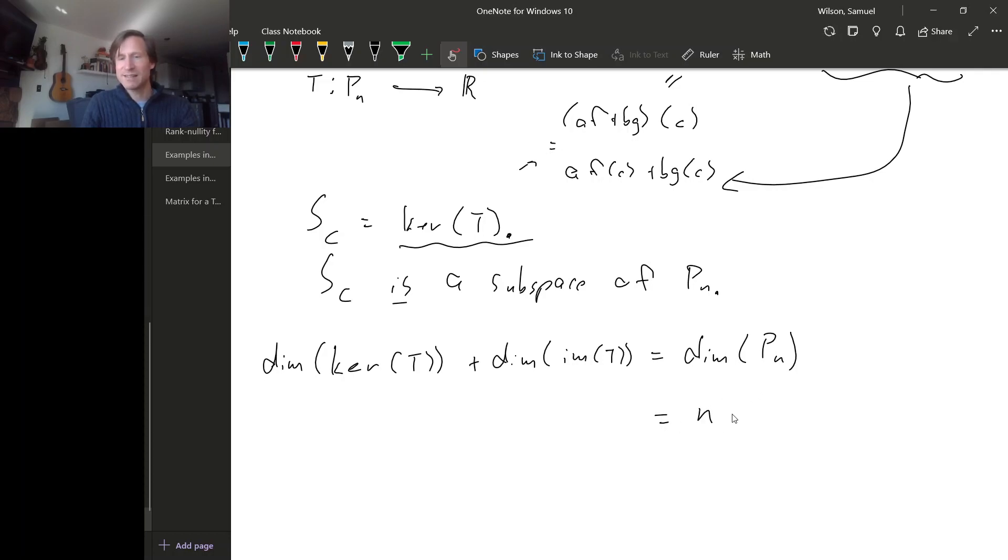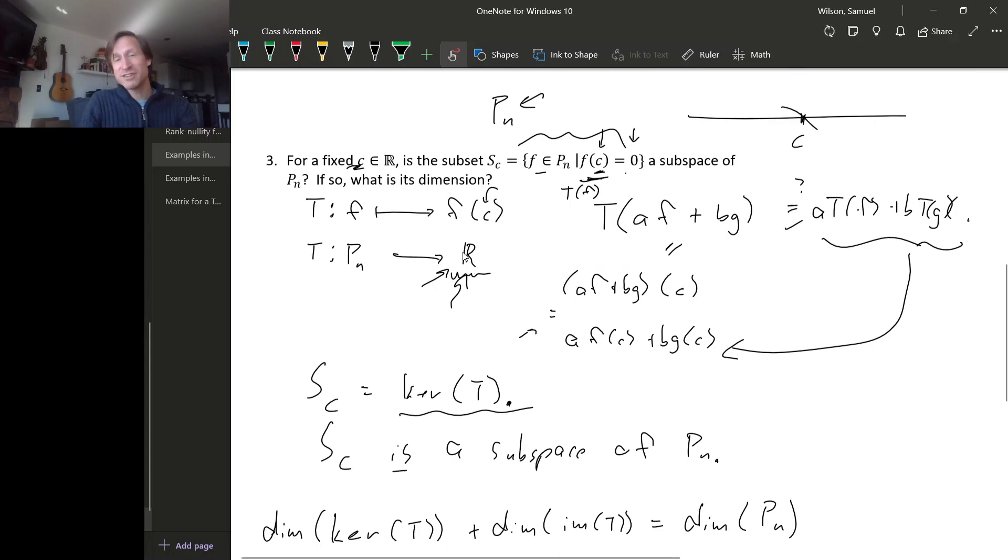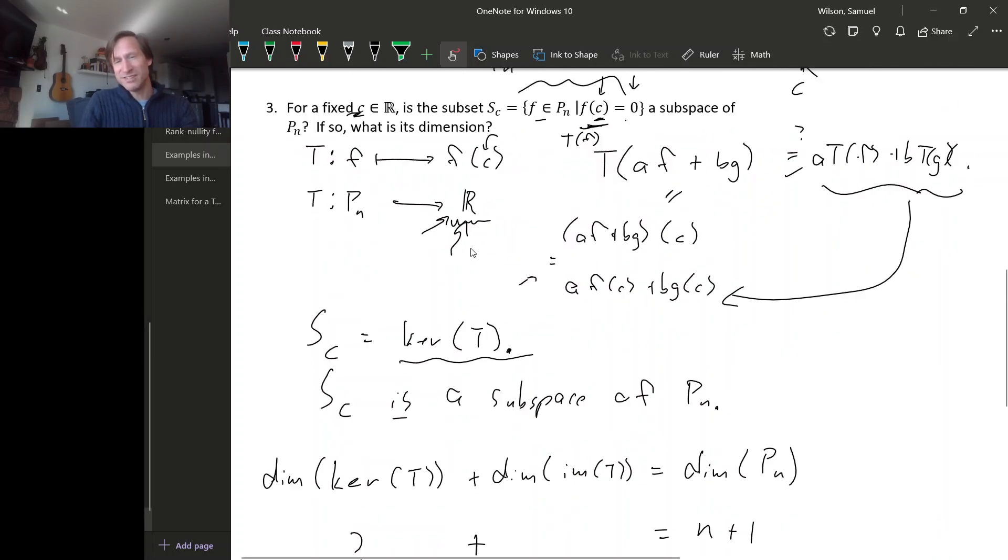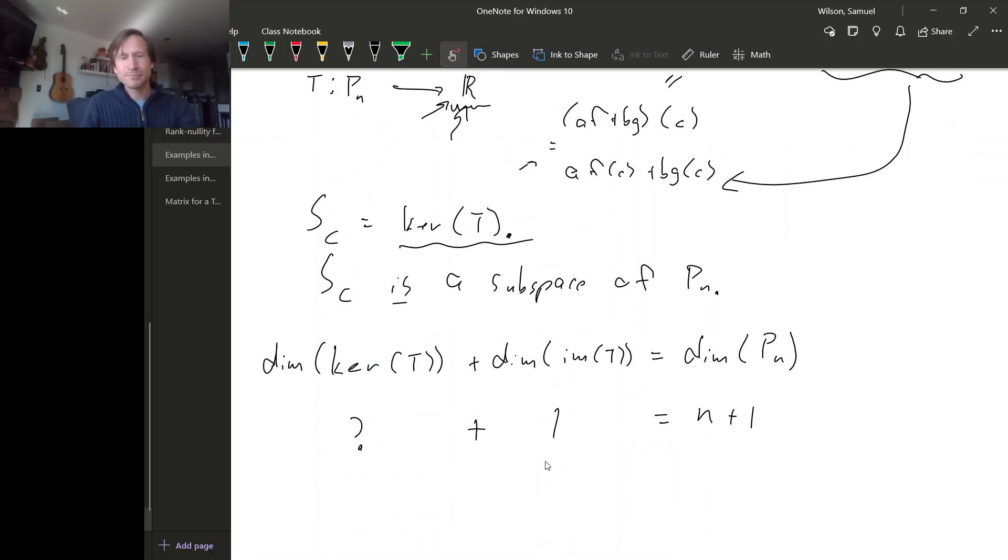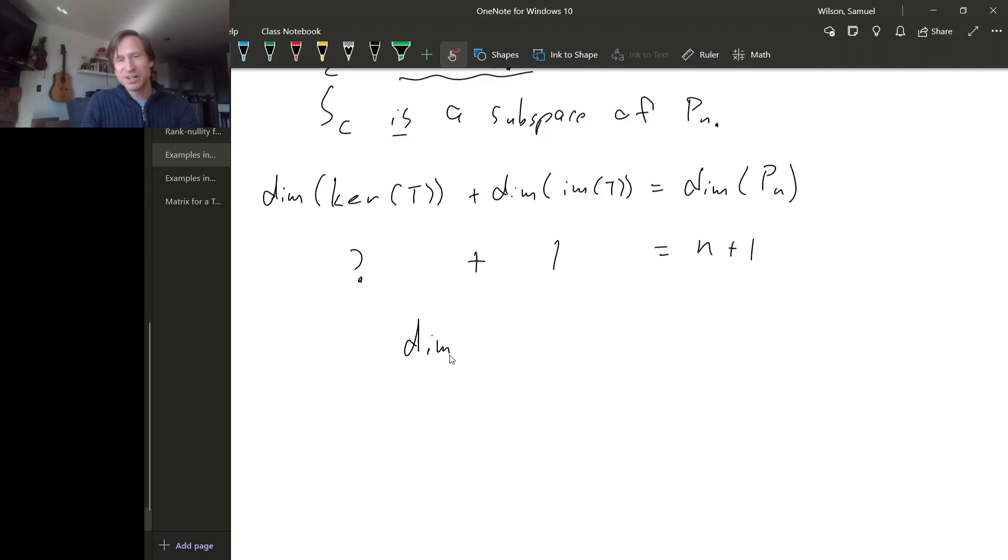Now, we know the dimension of P sub N already. We calculated that. That's N plus 1. The dimension of the kernel, that's what we don't know. And what about the dimension of the image? Well, what is the image? The range vector space is the real numbers. So the possible dimensions for the image are either 0 or 1, because the dimension of R is 1. If the dimension of the image is 0, that would mean the only number in the image of this map is 0. But clearly there are polynomials that when you evaluate them at C don't give you 0. So the image of this map can't be just 0, so it has to be all of R, and that means that this dimension is 1. So now we can just solve this equation for the unknown dimension.